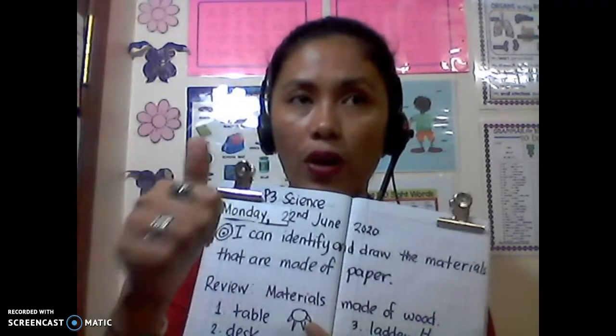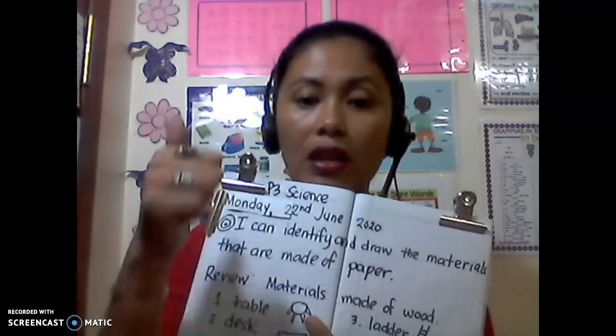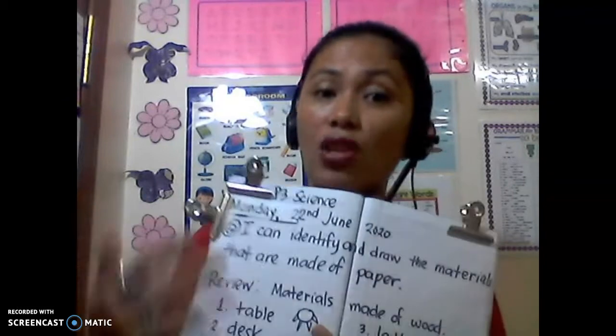You're going to answer four kinds of this. You're done with the things that are made of wood, and today you're going to do the paper. And then for the coming days, you're going to answer things that are made of metal and also plastic. So same thing, you're going to draw. In each document, there's only five things.